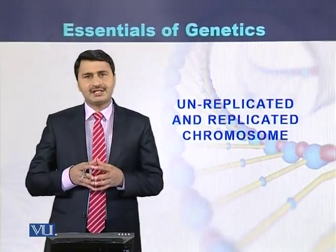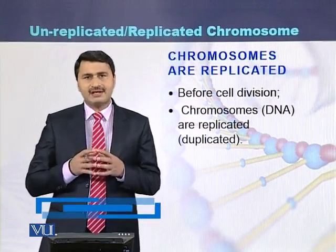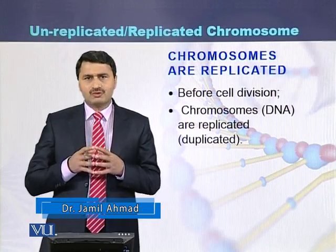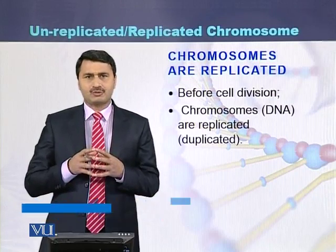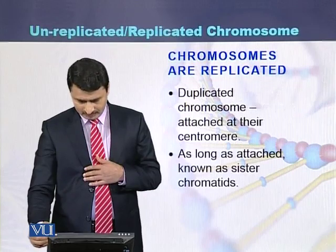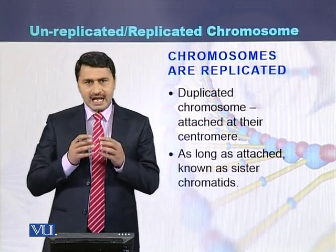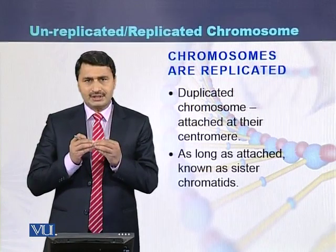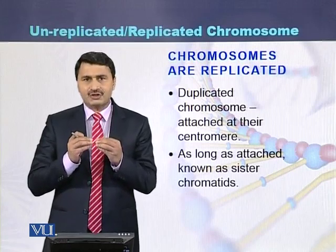Unreplicated and replicated chromosomes. Before cell division, chromosomes replicate. Replicated chromosomes are also called duplicated chromosomes. Duplicated chromosomes are attached at a point called the centromere. As long as they are attached, they are called sister chromatids.